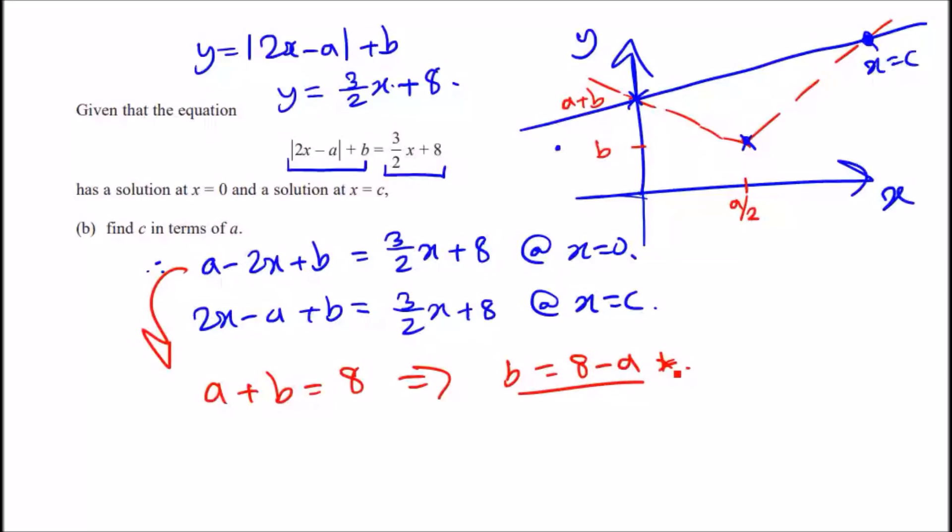So that's one bit done. Now we can take the second equation and plug in the values of c and eventually plug in the values of b. So for equation 2, plug in everything we have. We've got 2c minus a, replace b with 8 minus a, so plus 8 minus a equals, replace x with c, so 3 over 2c plus 8.